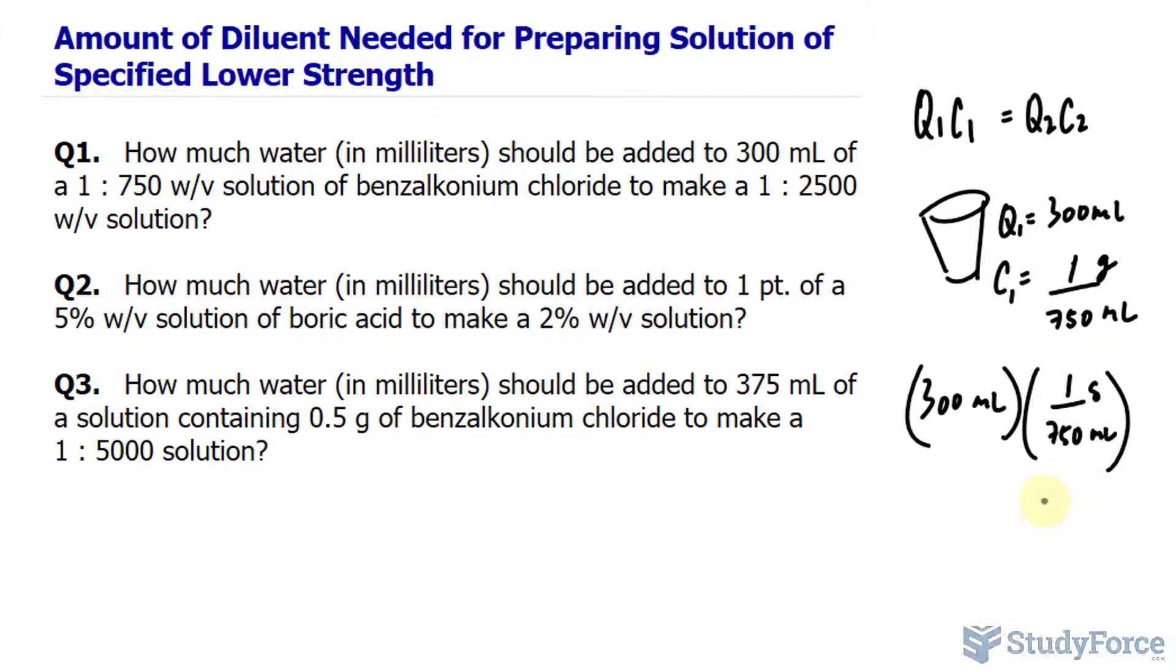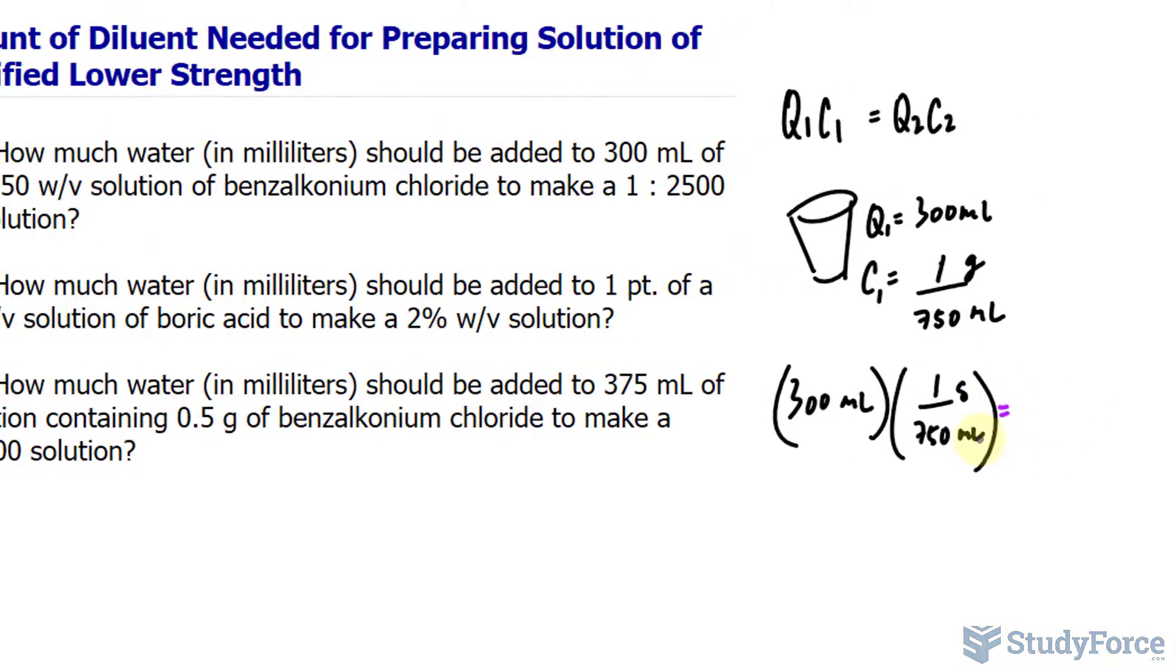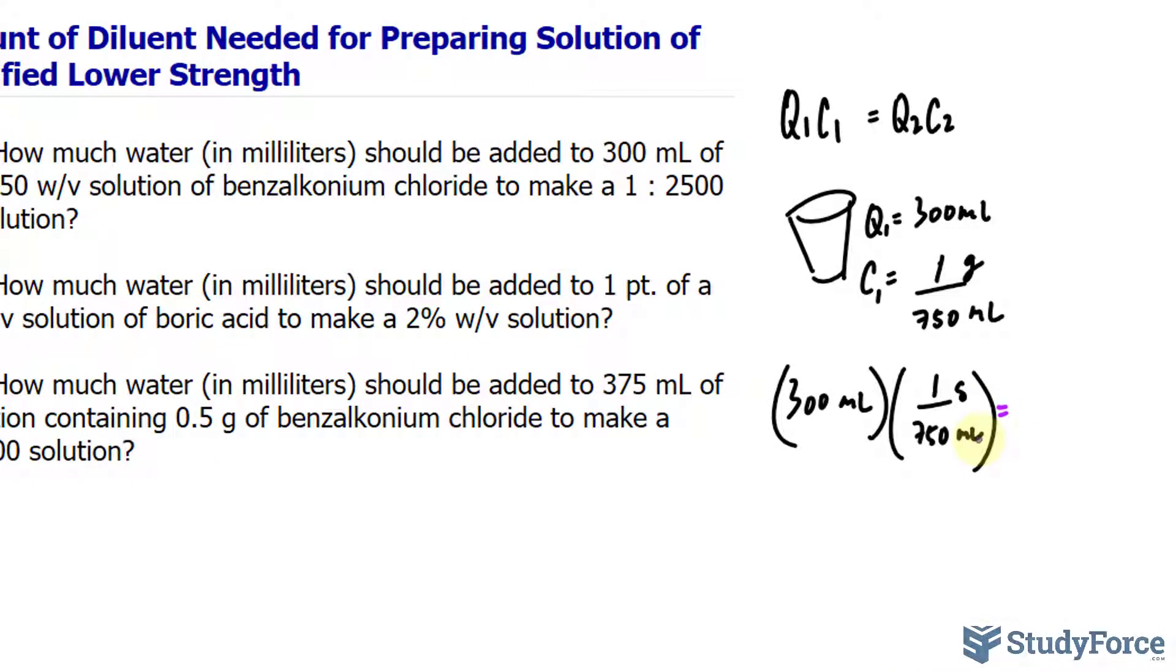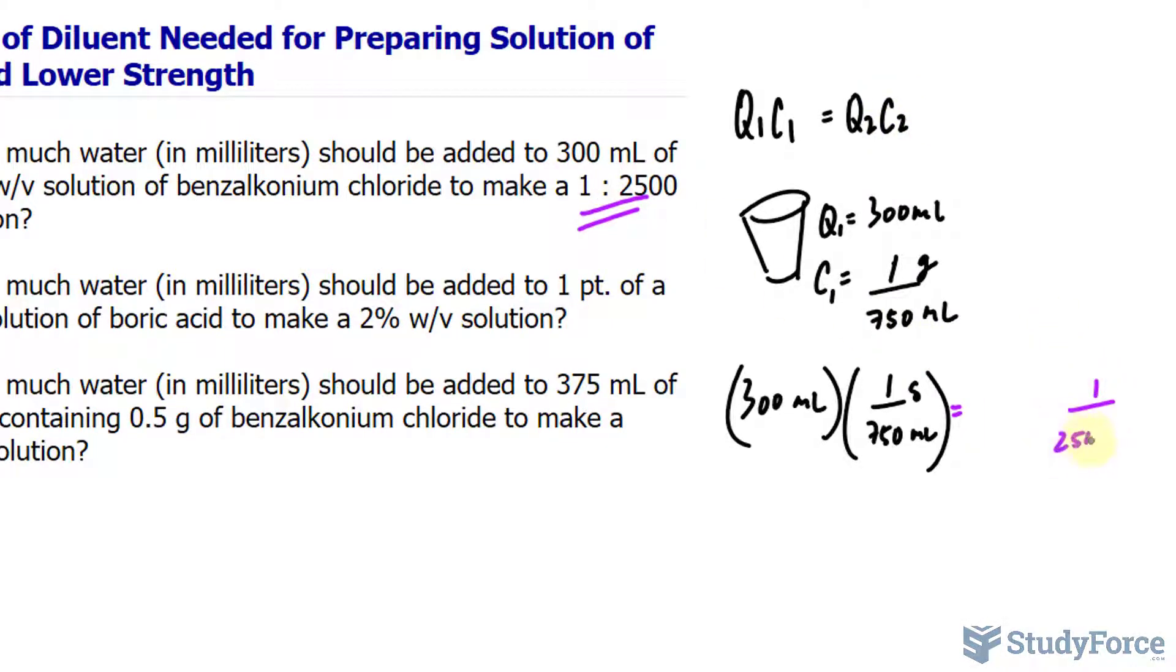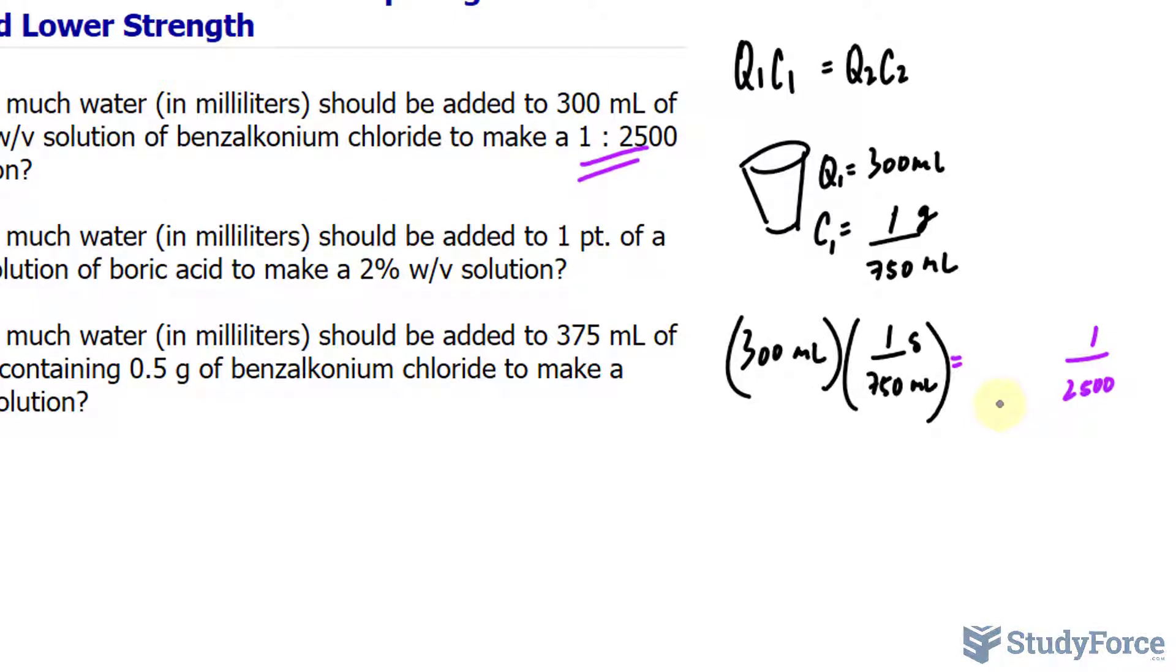These two values can be substituted in for Q1C1. 300 milliliters multiplied by 1 over 750 grams per milliliters. Now if you've been watching my videos prior, in those videos I usually convert 1 over 750 into a decimal and you can definitely do that if you like, but I'll keep it as a fraction for this video. That equals, and they haven't told us the quantity of the solution they want us to prepare, except we know that its concentration is much weaker than the stock solution. So for C2 I will write down 1 over 2500, and the units will also be grams per milliliters.